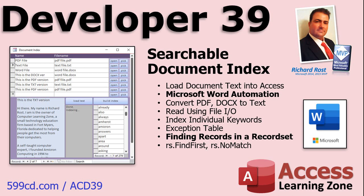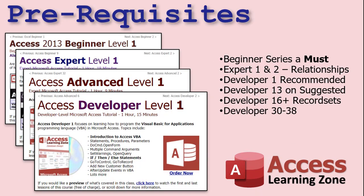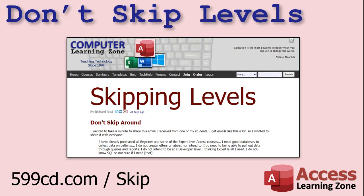Then we'll work with record sets some more. I spent a lot of time on record sets in earlier lessons. We'll learn how to find records while a record set is open, and we'll learn about the NoMatch property. This lesson follows Access Developer 38 and everything that comes before it. I strongly recommend you've completed the beginner, expert, advanced, and developer series before continuing. My lessons are meant to be taken one after the other — each one builds on the one that came before it.